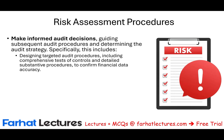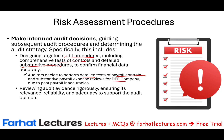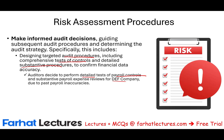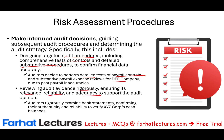It also helps in designing targeted audit procedures, including comprehensive tests of control and detailed substantive testing to confirm financial data accuracy. Once I plan, I can determine which tests of control and which substantive procedures to carry out. For example, auditors decide to perform detailed tests of payroll controls and substantive expense reviews for DEF Company due to past payroll inaccuracies. Planning also helps in reviewing audit evidence rigorously, ensuring it's relevant, reliable, and adequate to support the audit opinion. For instance, auditors examine bank statements confirming their authenticity and reliability to verify the company's cash balances.